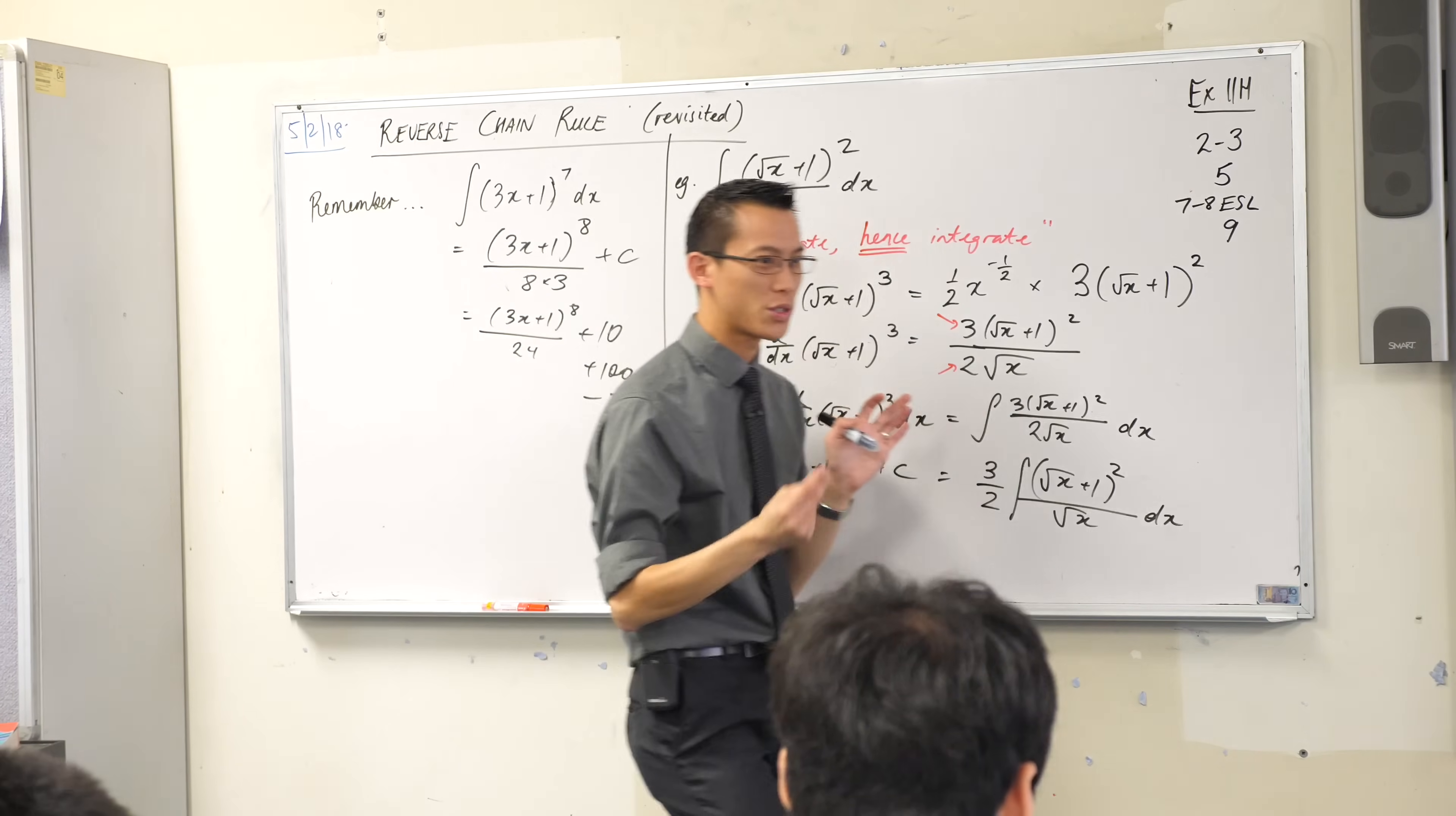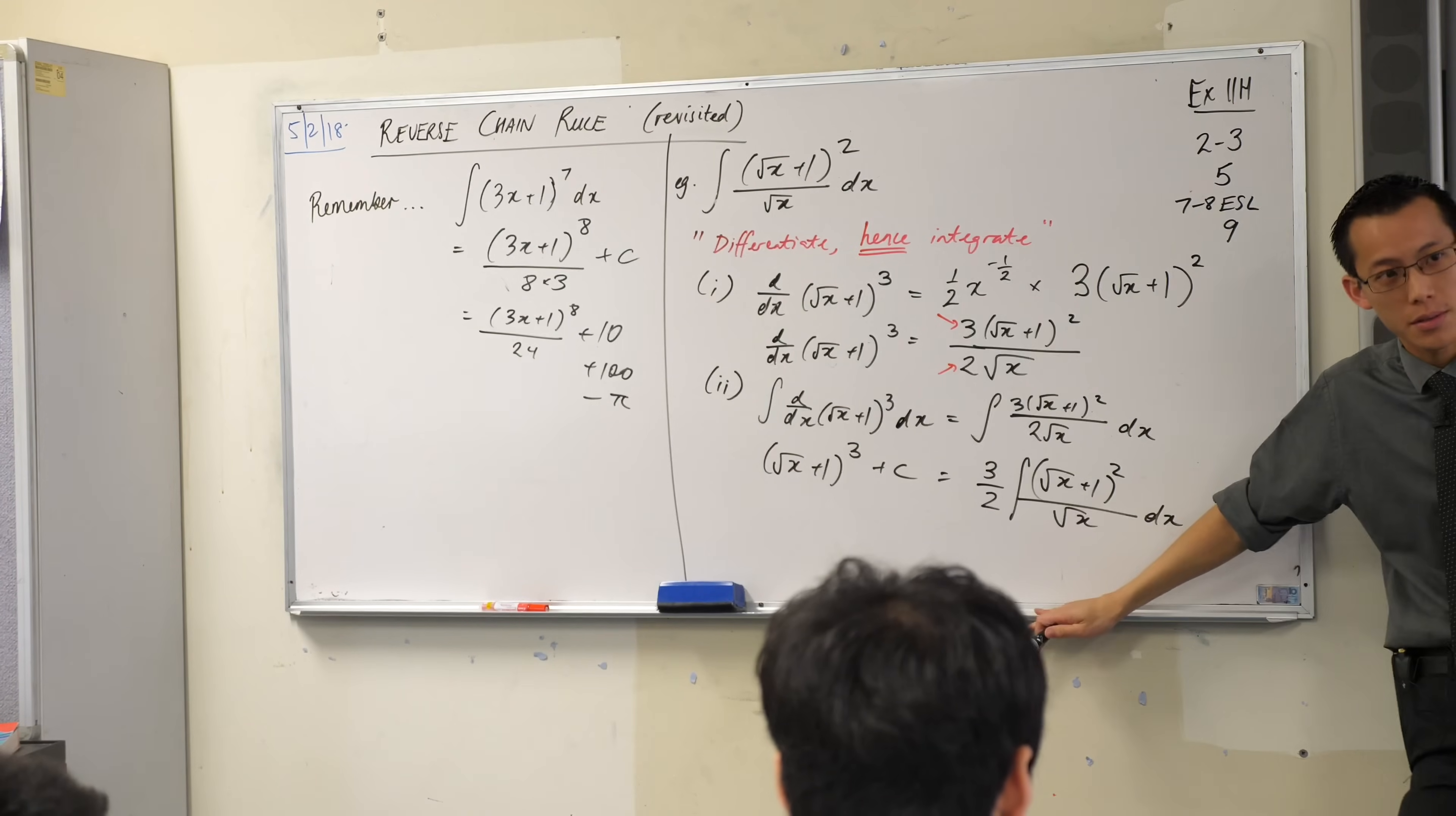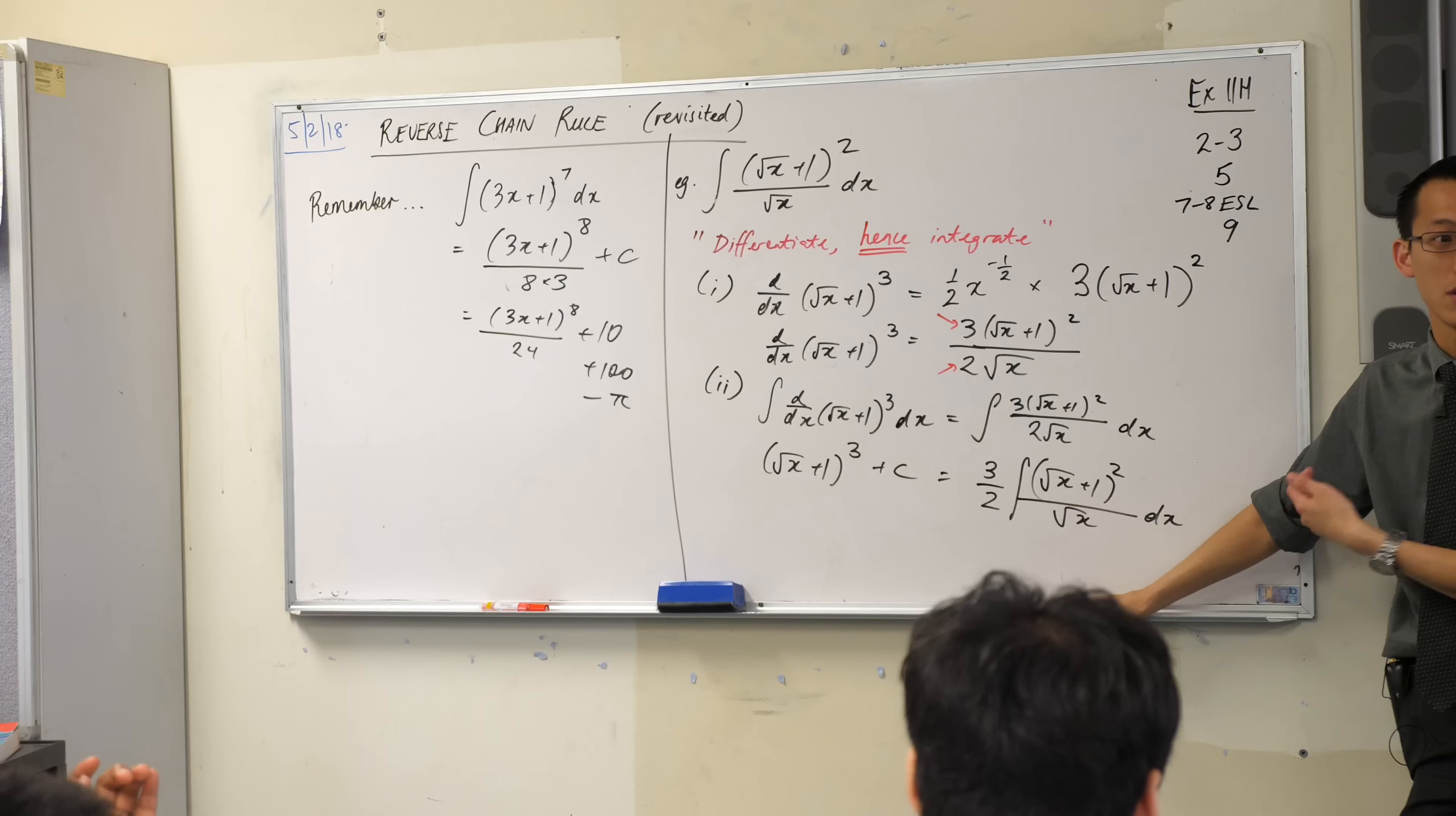Now I'm so close to getting my answer. So close. Have a look back at what we wanted and have a look at what we've got. What's the difference? It's just the 3 over 2. Now I don't want the 3 over 2 there. So can you tell me what operation I can do that will get rid of the 3 over 2?